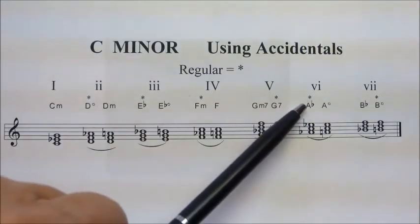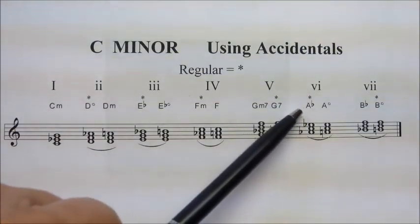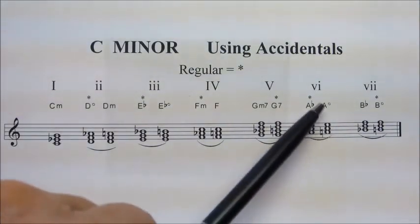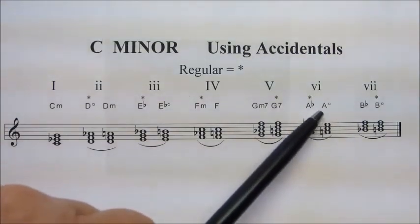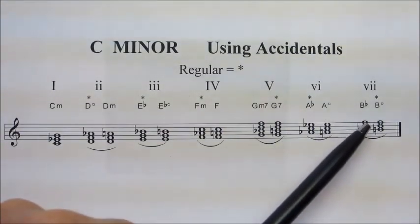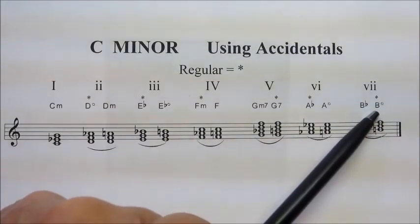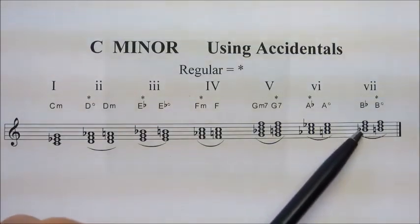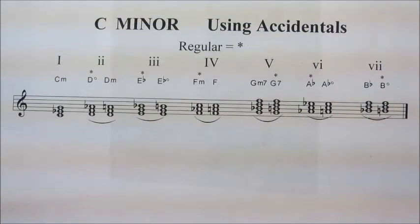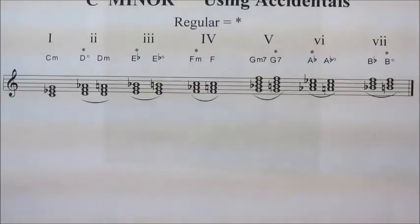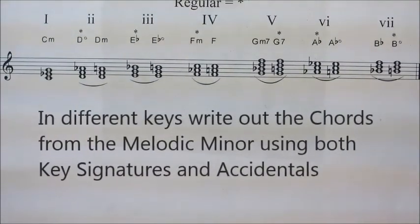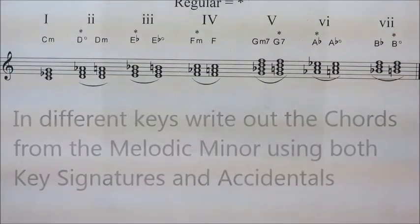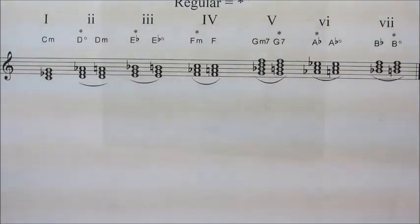Moving to the sixth chord, A-flat major is my regular form. When I naturalize the A, that raises the root a half tone, making that A diminished — my irregular form of the sixth chord. And my seventh chord, the regular form, the B-flat diminished, mainly because of the tritone. And the irregular seven will be the B-flat. It's very important that you write out these chords for yourself. Using different keys, write out the chords from the melodic minor using both key signatures and accidentals. It will definitely reinforce the chords you find in minor.